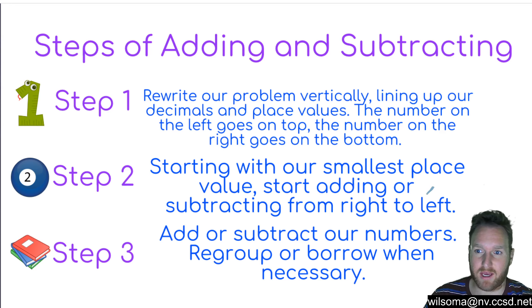Then step two, we have start with our smallest place value. So we start with our smallest place value, usually on the right, it's going to be the rightmost value. Start adding or subtracting from right to left. So we start from the right and then we go left.